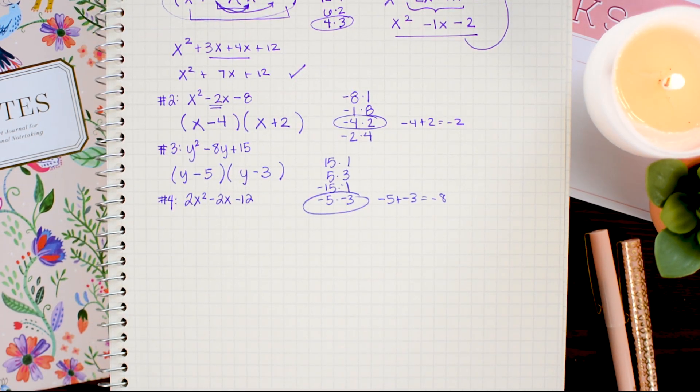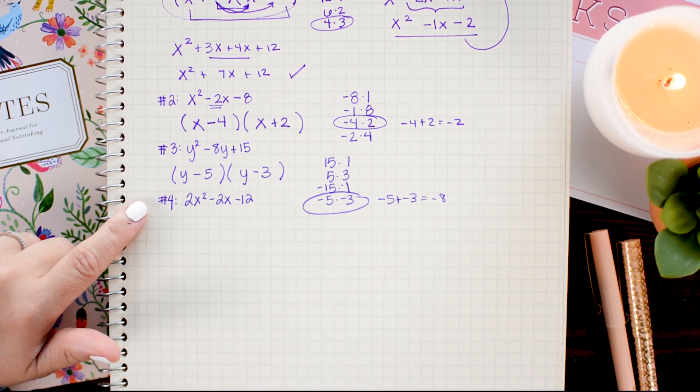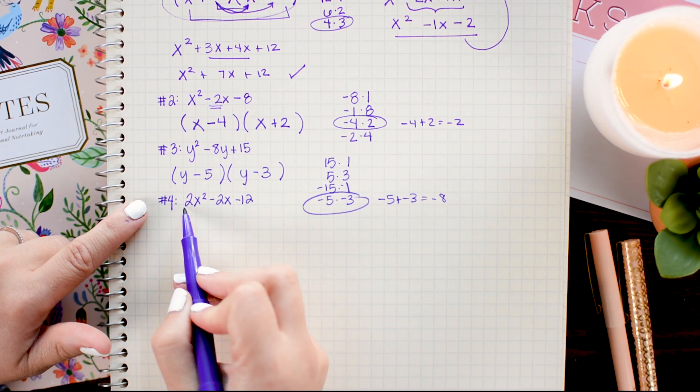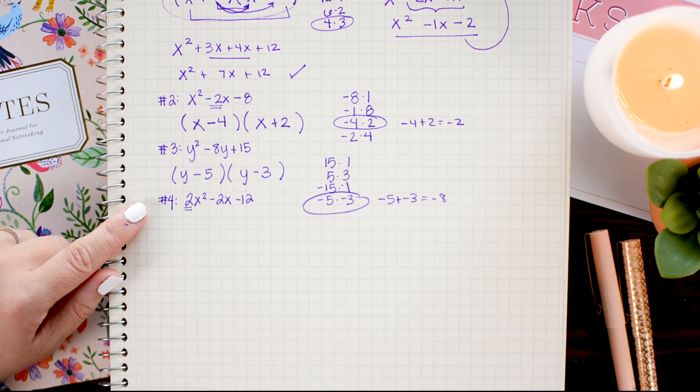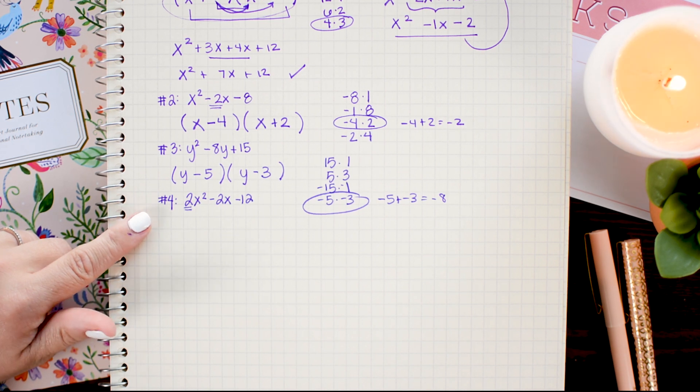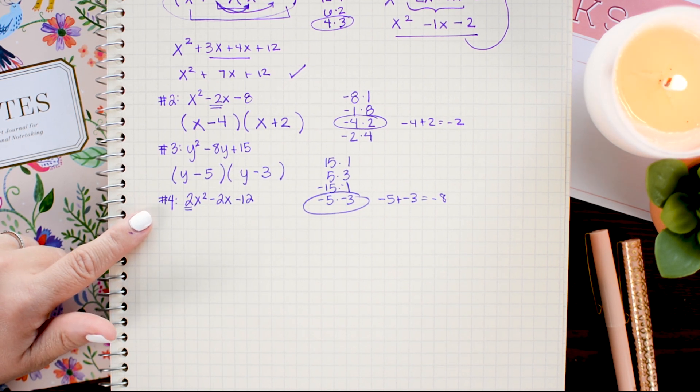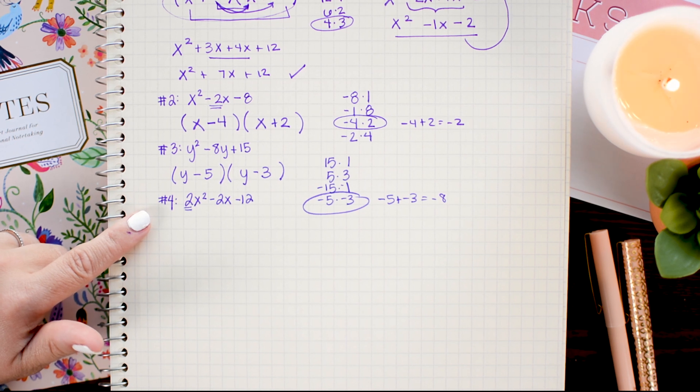In our next problem, we have a slightly harder example. We have 2x squared minus 2x minus 12. And what makes this problem more difficult is we have a number on our x squared term. Now in a lot of instances, you're going to have to employ a method called the ACB method in order to factor this out. But before you resort to trying to factor using that method, it is handy to see if you can pull out a GCF.